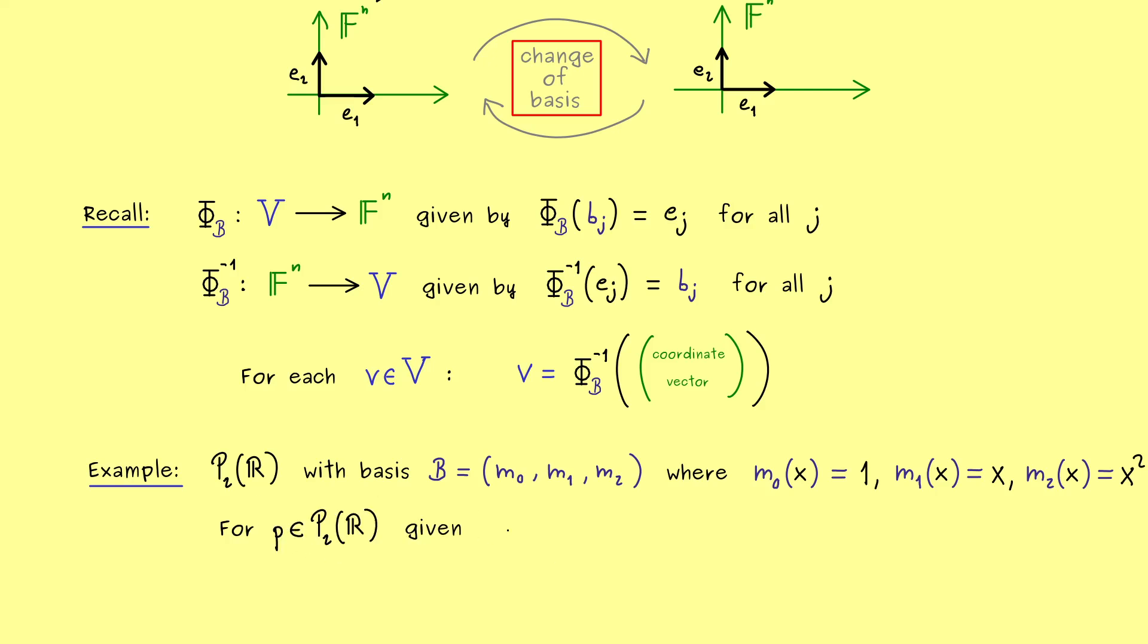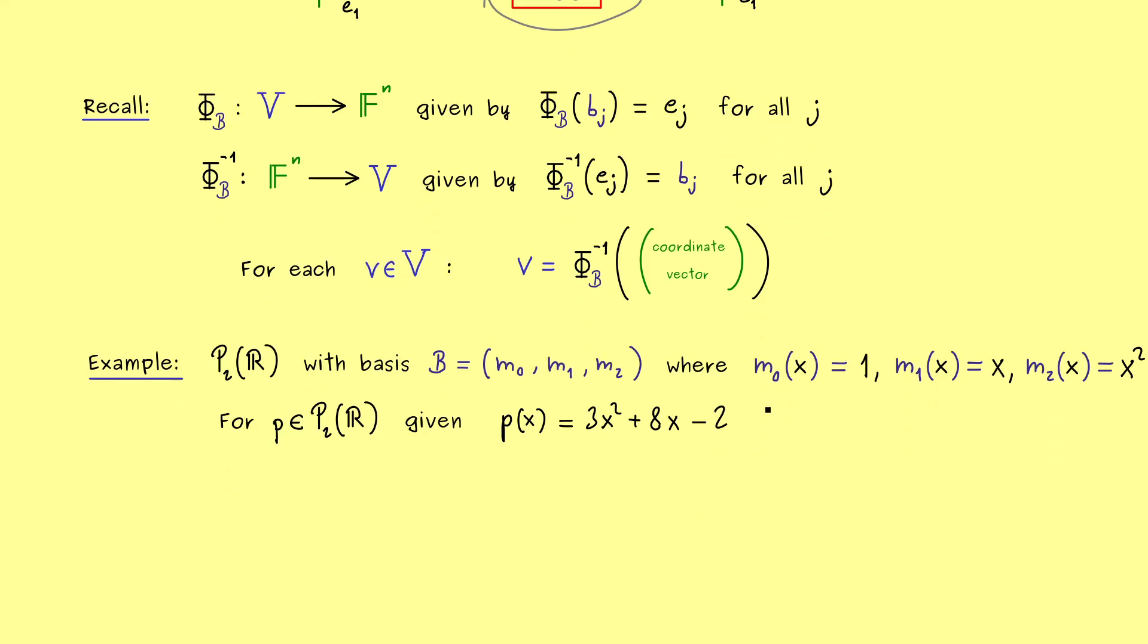This means we have a nice basis in our P_2. Then let's look at an example p given as p(x) defined by 3x² + 8x - 2.